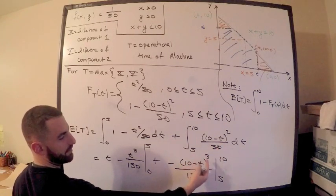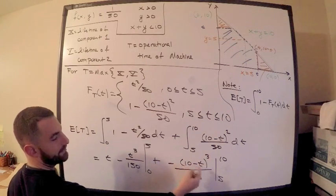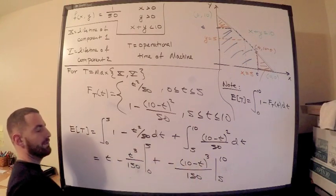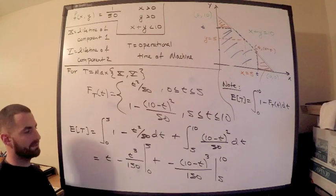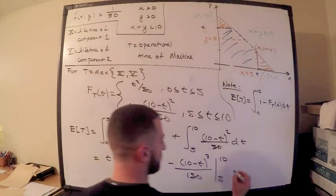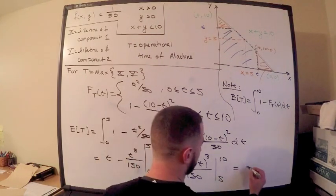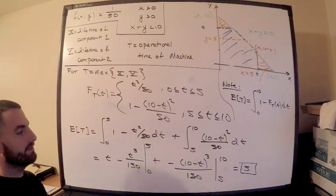Plug in my endpoints. I don't want to do it because I'm running out of room. But this is just the fundamental theorem of calculus. This is easy. Just plug in the endpoints, and this is equal to 5, which is my answer. So the expected value is 5.